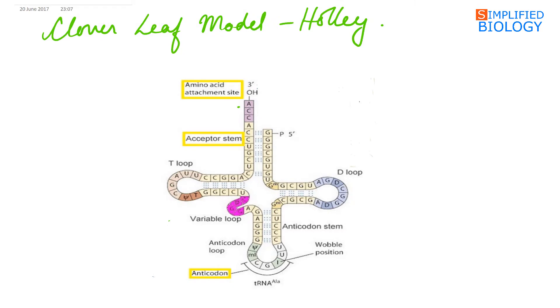The clover leaf model of the transfer RNA was given by Holley. According to this model, the tRNA molecule consists of four arms, three of which are with paired and unpaired loops, while the fourth is without an unpaired loop, that is the receptor arm, or you can say amino acid receptor arm.